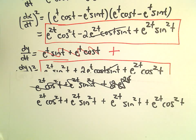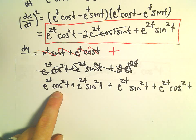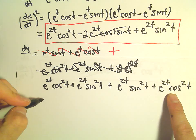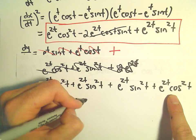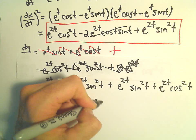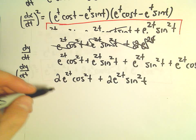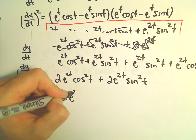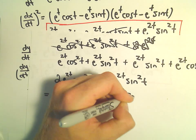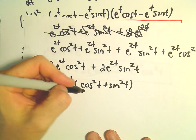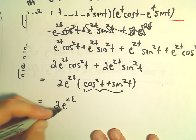Now we do have like terms. We have e to the 2t cosine squared twice and e to the 2t sine squared twice, giving us 2 e to the 2t cosine squared t plus 2 e to the 2t sine squared t. We can factor out 2 e to the 2t, leaving cosine squared t plus sine squared t, and by the Pythagorean trig identity that equals 1. So we're left with 2 e to the 2t.